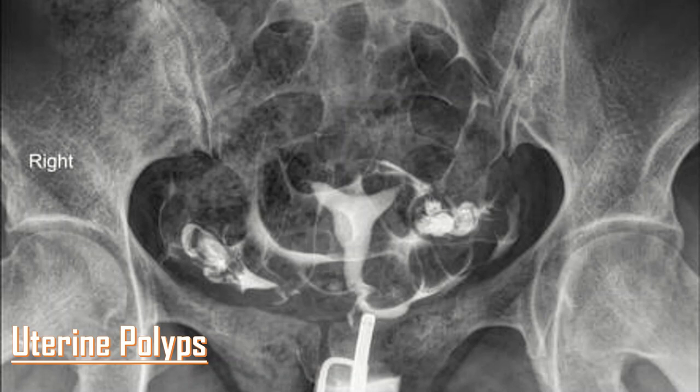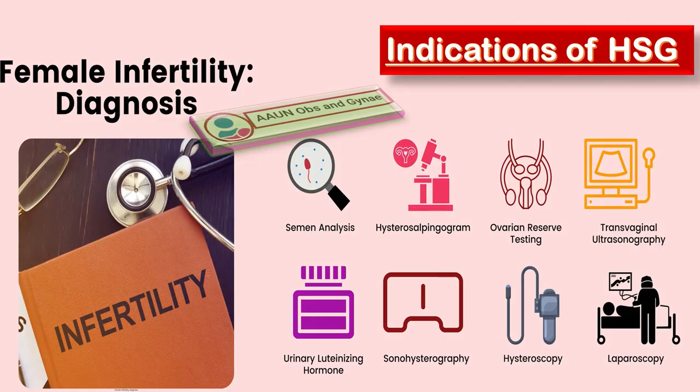The typical appearance of endometrial polyps on HSG is a well-defined, homogeneous polypoid lesion that is isoechoic to the endometrium with preservation of the endometrial-myometrial interface. Another indication of HSG is the workup and evaluation of infertility, when tubal patency is checked.